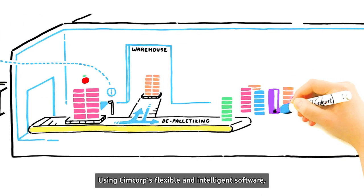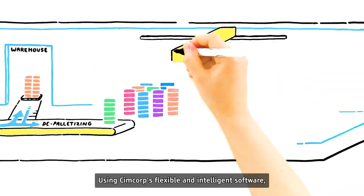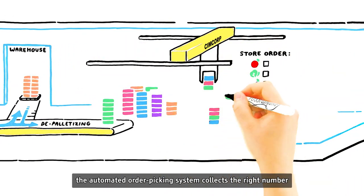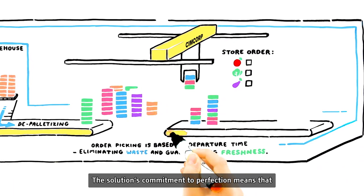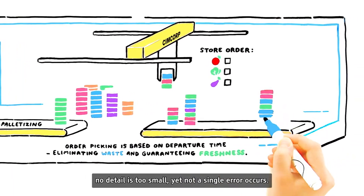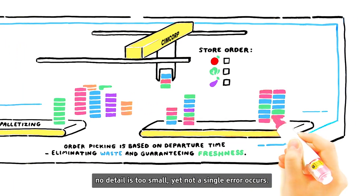Using SimCorp's flexible and intelligent software, the automated order picking system collects the right number of ordered products for each store. The solution's commitment to perfection means that no detail is too small, yet not a single error occurs.